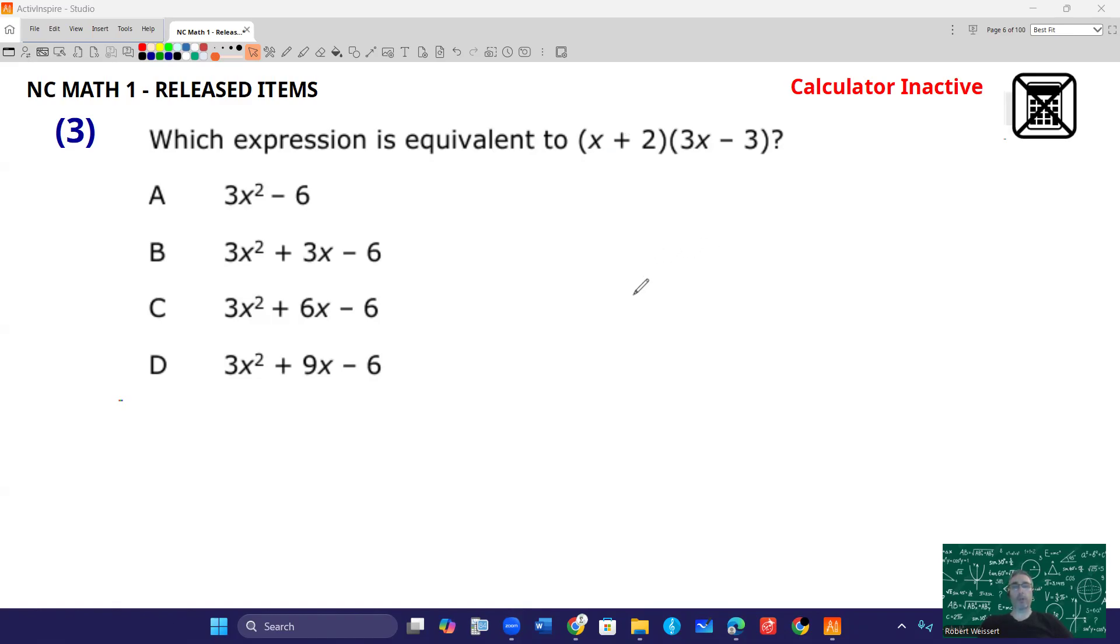Probably what you want to do if you're not the best at these is to make yourself a 2x2 box. At the top of the boxes, we'll put one of the binomials. So this is going to be x plus 2. Make sure you put the correct signs. And then the other one is going to be 3x minus 3. Notice that I put the negative with that 3. And then we're going to multiply.